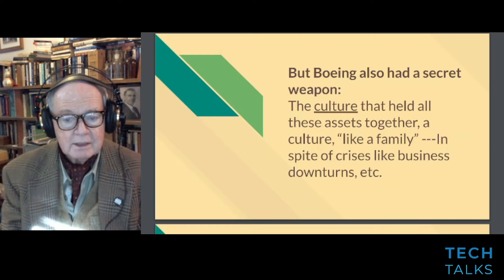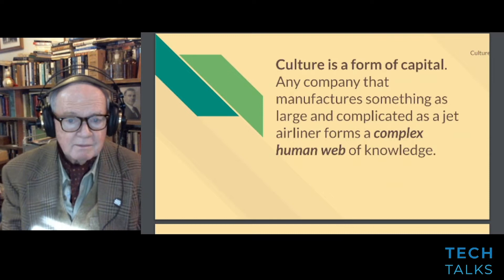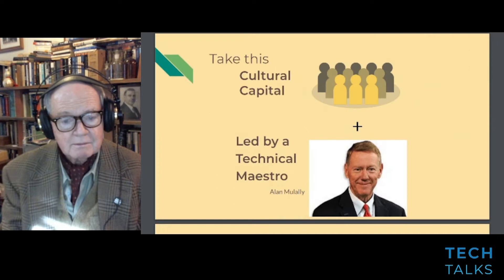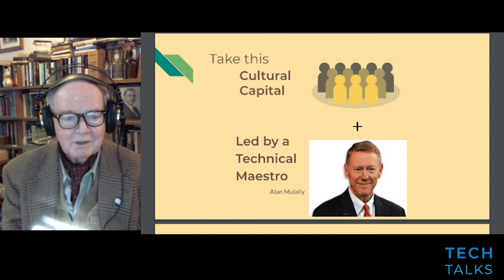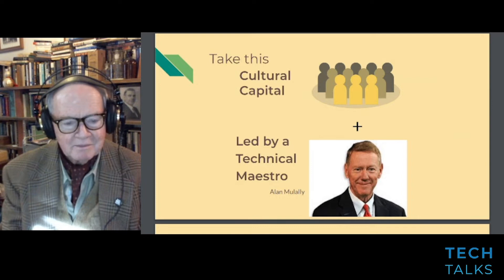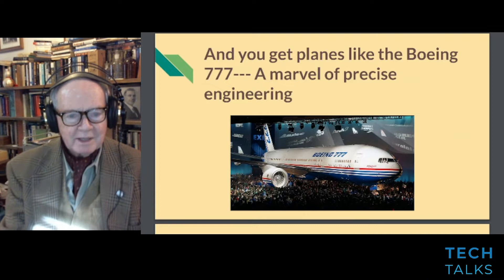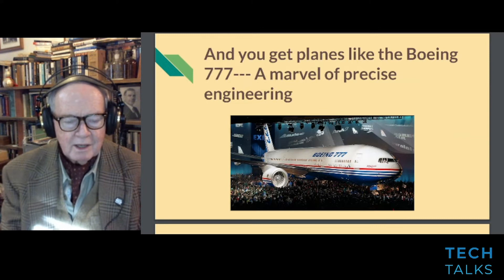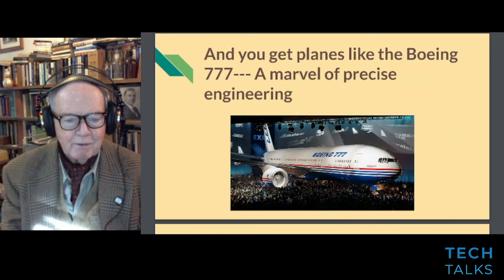Culture is a form of capital. Any company that manufactures something as large and complicated as a jet airliner forms a complex human web of knowledge. If you take this cultural capital and you are led by a technical maestro — and Alan Mulally is certainly an example of that — you get something like the Boeing 777. The 777 was a beautiful example of precise engineering, one of the first planes to be completely designed on a computer.